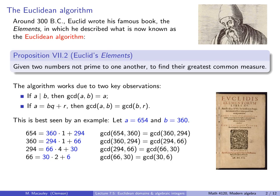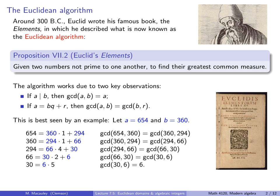66 equals 30 times 2 with a remainder of 6, and the GCD of 66 and 30 is the same as the GCD of 30 and 6. Now notice: 30 is a multiple of 6, and this was bound to happen. So we write 30 as 6 times 5, and by the first property the GCD of 30 and 6 is just 6. We conclude that the GCD of the original two numbers, 654 and 360, is equal to 6. This is what Euclid came up with over 2,000 years ago.